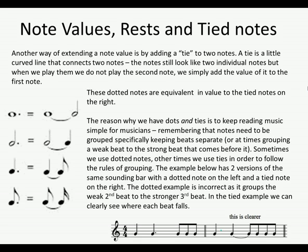There's an example below with two versions of exactly the same sounding bar. The bar on the left has a dotted note and the bar on the right uses a tied note. The dotted example on the left is incorrect as it groups the weak second beat to the stronger third beat. Whereas in the tied example on the right we can clearly see where each beat falls — beat one, beat two, beat three, and beat four. In the dotted version it's really unclear: here's beat one, here's beat two and half of beat three, here's the other half of beat three and beat four.